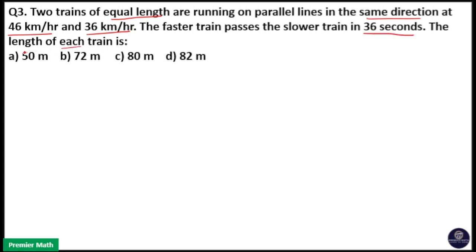The length of each train is - here two trains of equal length L running in parallel lines, and one has speed 46 km per hour and another has speed 36 km per hour. Here this faster train passes the slower train in 36 seconds.